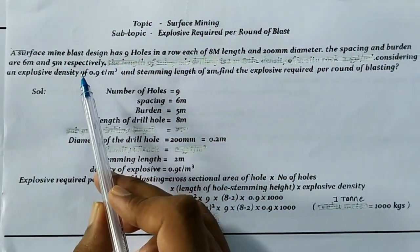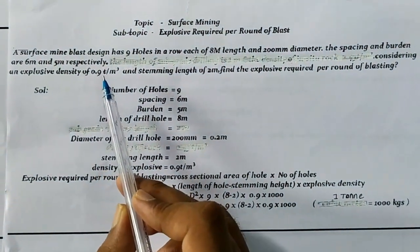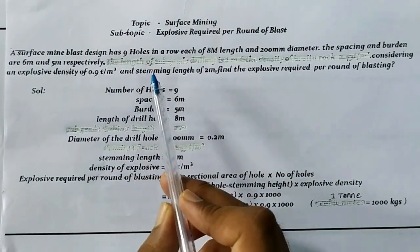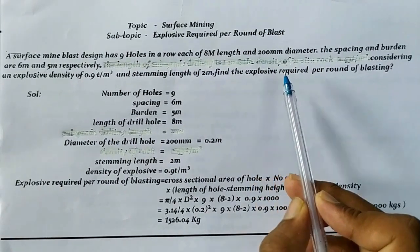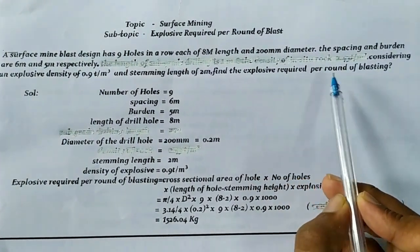Considering an explosive density of 0.9 tons per meter cube and stemming length of 2 meters, find the explosive required per round of blasting.